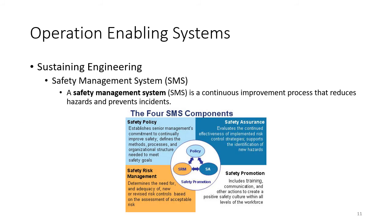One thing not mentioned explicitly in the System Engineering Handbook, but very important in industry today with regards to sustaining engineering, is the Safety Management System, or SMS. This is a continuous improvement process designed to reduce hazards and prevent accidents — something put in place during operations specifically to address hazards and incidents.